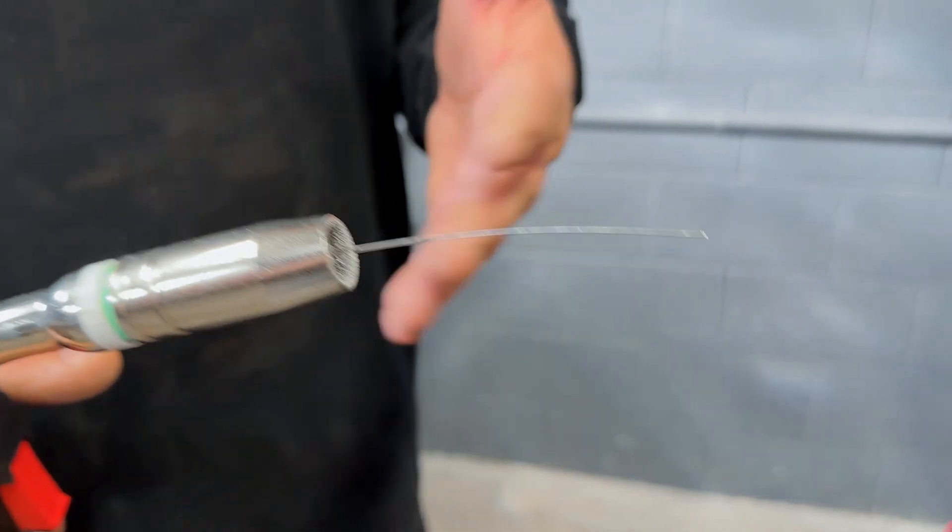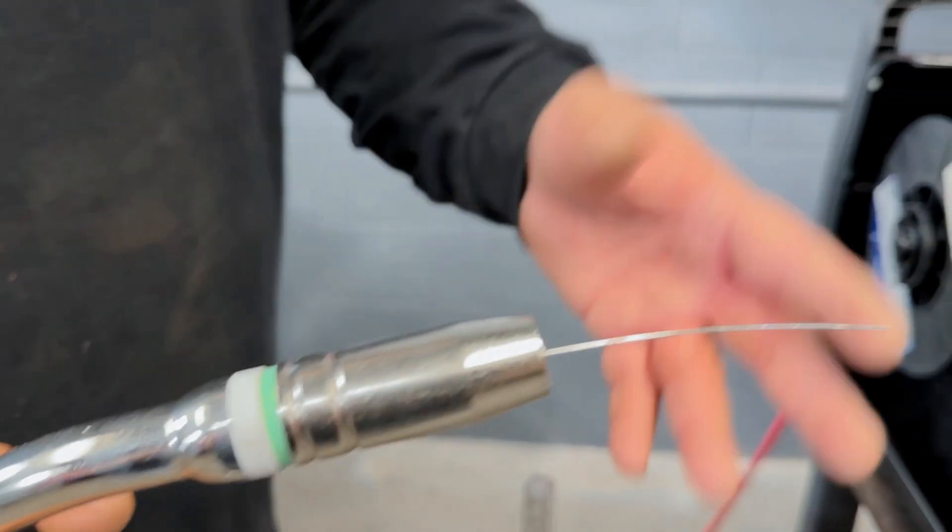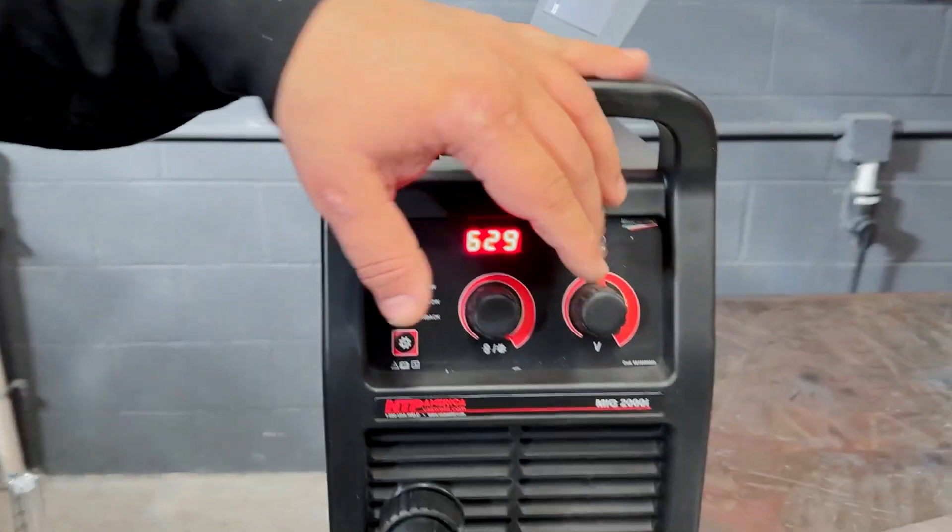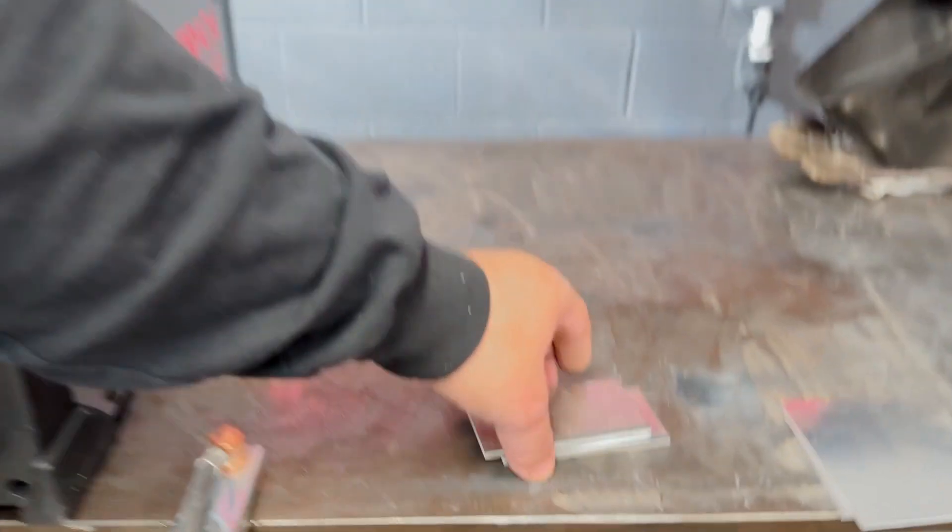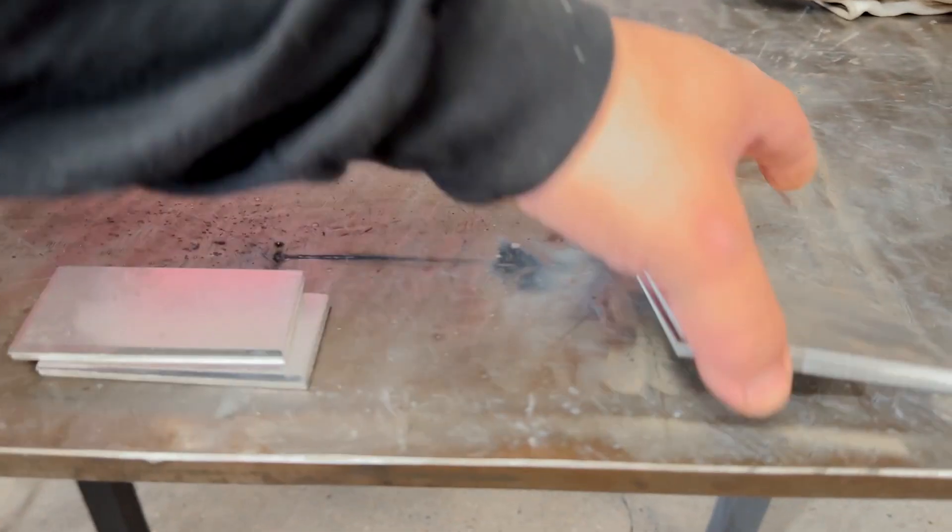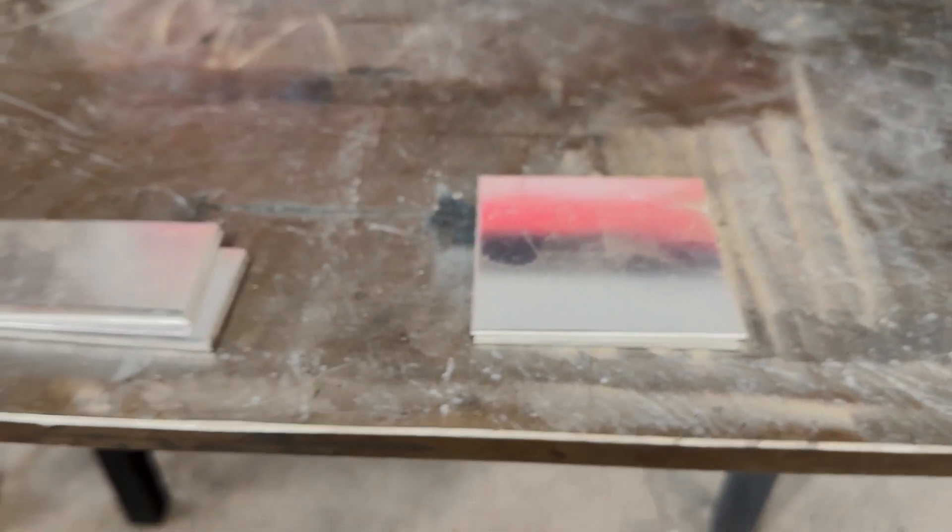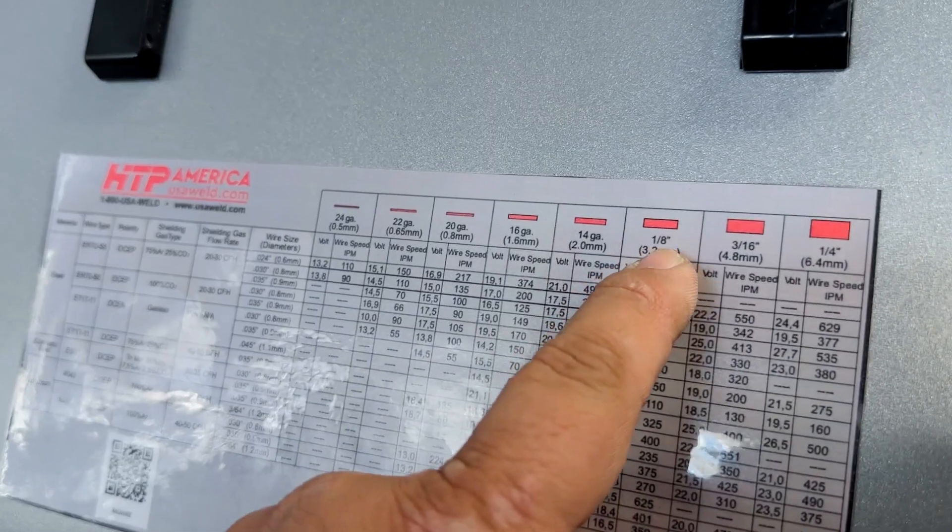So that purged our wire and purged our gas and fed our wire out at the same time. Now we have two pieces of aluminum. We have some quarter inch here we're going to be welding later on. We're going to start off with some hundred thousands. Hundred thousands is right in between 14 gauge and one eighth.